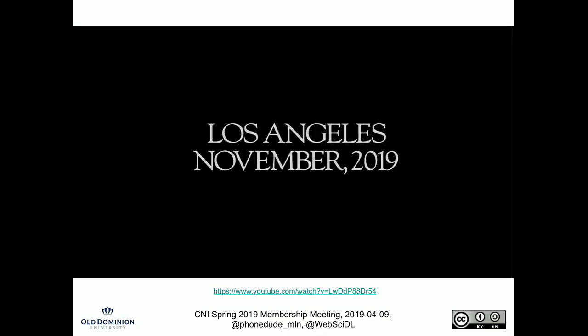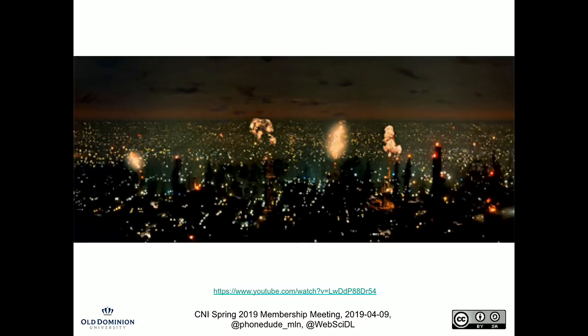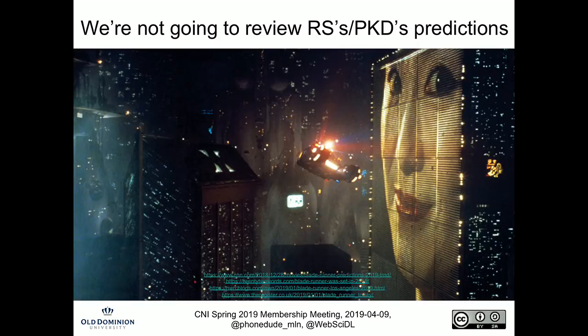Blade Runner is set in 2019. The very opening credits say 'Los Angeles 2019,' and we pan in and see a horrific post-apocalyptic civilization that has collapsed because of pollution. We have robots that live off world. It's a dystopian, post-apocalyptic future. Both Philip K. Dick and Ridley Scott predicted a lot of things in these works, and because it's 2019, there are all kinds of links — I tweeted the link to the slide, so you can go online and find all the material.